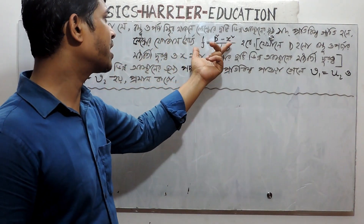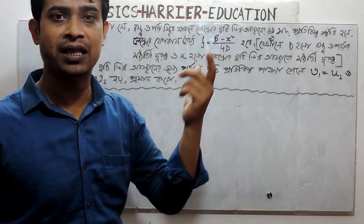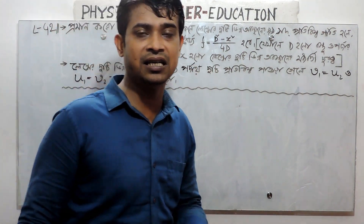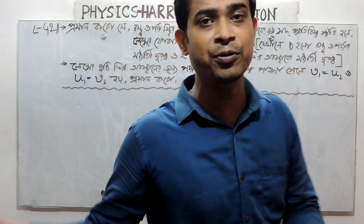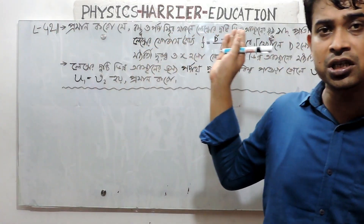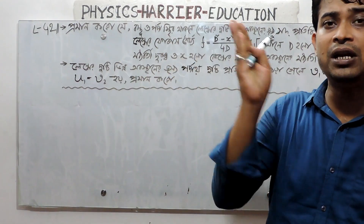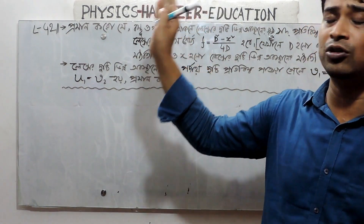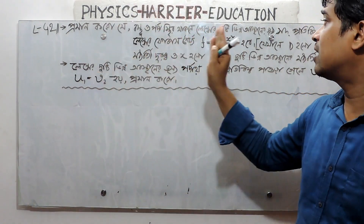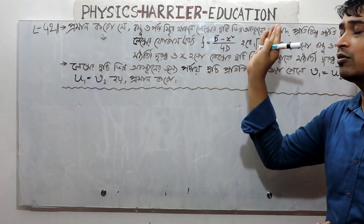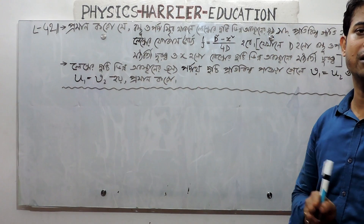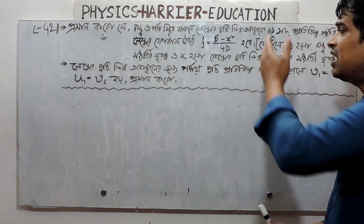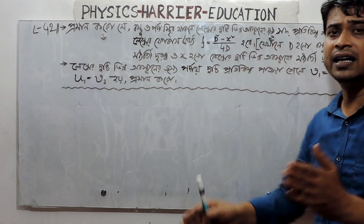This is a physicality of d square minus x square by 4d. So, this lens formula is a physicality of d square minus x square by 4d. Now, if d is a physicality...